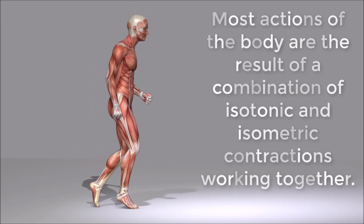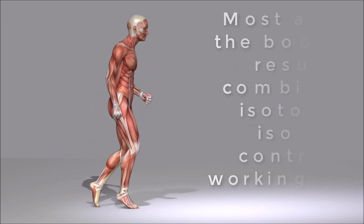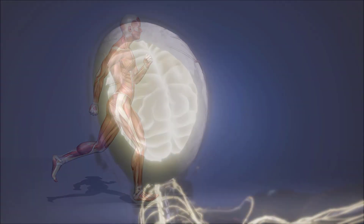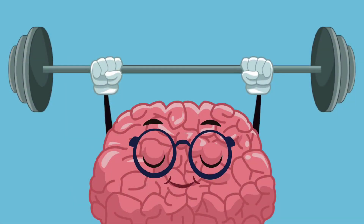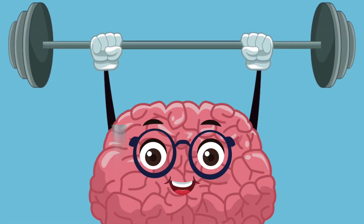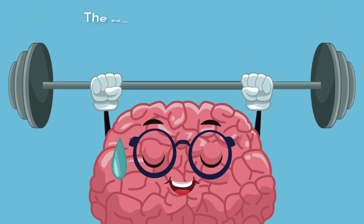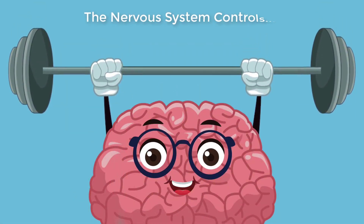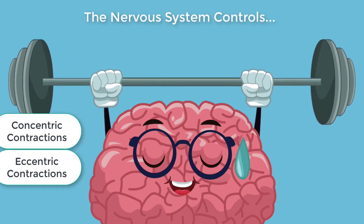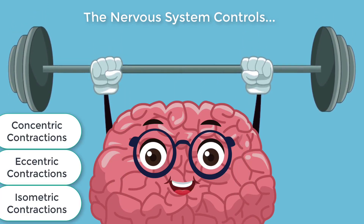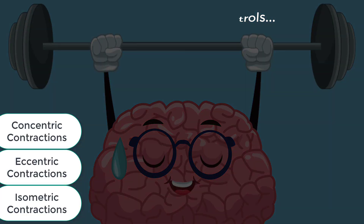All of these muscle activities are under the exquisite control of the nervous system. Neural control regulates concentric, eccentric, and isometric contractions.